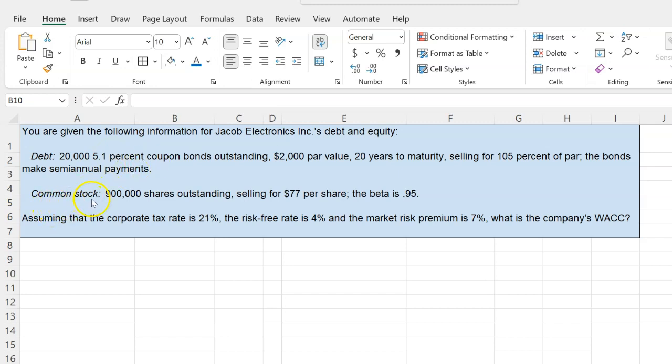You're further told that common stock is such that the firm has 900,000 shares outstanding and each is selling for $77 per share. You're also told that the beta of the company is 0.95. So assuming that the corporate tax rate is 21%, the risk-free rate is 4%, and the market risk premium is 7%, the question is what is the company's weighted average cost of capital?